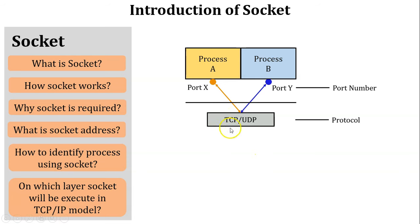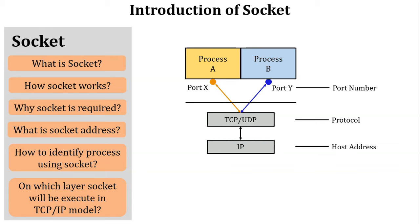For example, process A is associated with the TCP protocol and process B is associated with the UDP protocol. The TCP protocol assigns a port number for process A, and the UDP protocol assigns a port number for process B. The port number is assigned by TCP or UDP, which means the socket is executed at the transport layer in the TCP/IP model as well as in the OSI model. The socket address is associated with the port number as well as the IP address. As the process passes from the transport layer to the network layer, an IP address is assigned, and a unique socket address is defined.